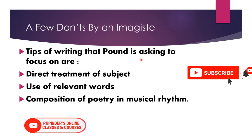The tips for writing that Pound asks us to focus on are: first, direct treatment of the subject — if you have chosen a subject, deal with it directly, not indirectly. Second, use of relevant words — use only words that are needed, no unnecessary filler words. Third, composition of poetry in musical rhythm, so that the poems can be recited and have a musical quality.